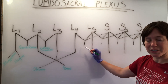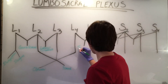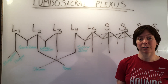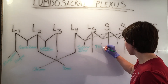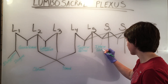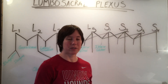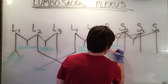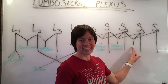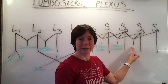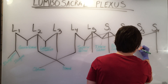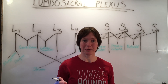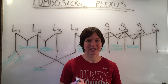The first line is your superior gluteal nerve. The next will be your inferior gluteal nerve. Next will be your posterior cutaneous nerve, and the last one will be your pudendal nerve. Remember, we also have the big sciatic nerve with two divisions: the common peroneal and the tibial.